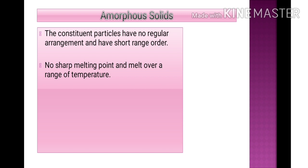Glass melts over a range such as 80°C to 90°C or 60°C to 70°C. In contrast, crystalline solids have a very sharp melting point, meaning a solid melts at a fixed temperature such as exactly 60°C or 70°C.